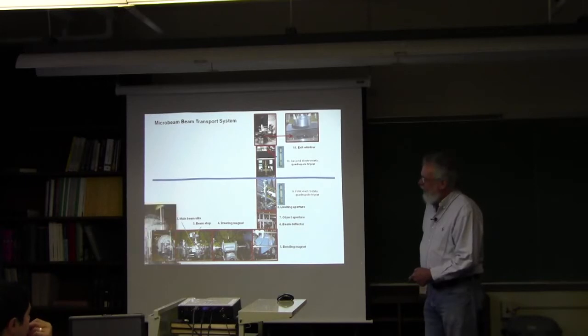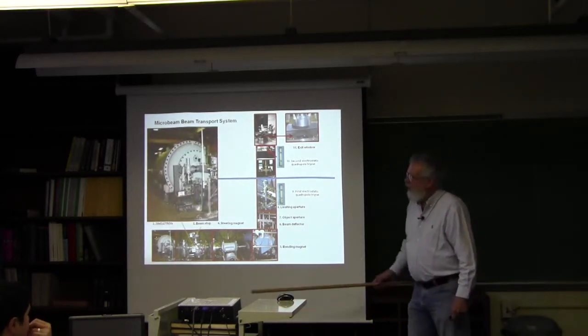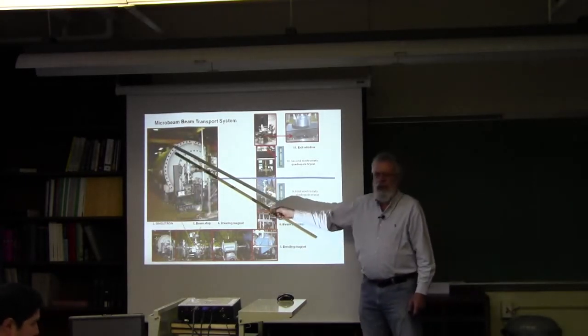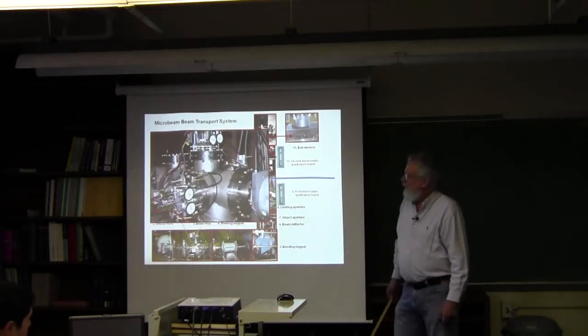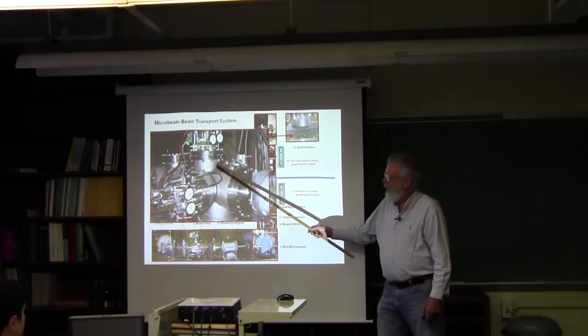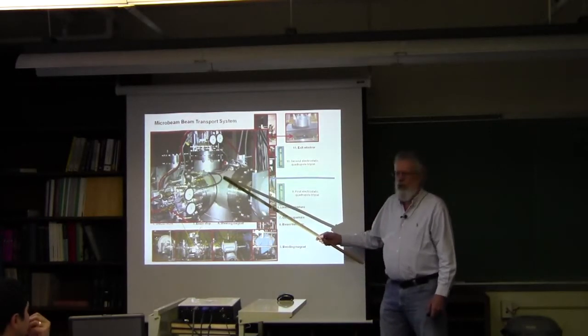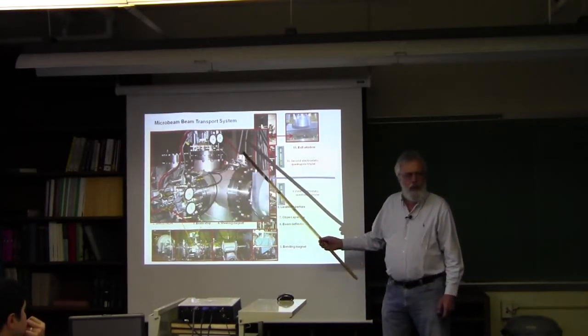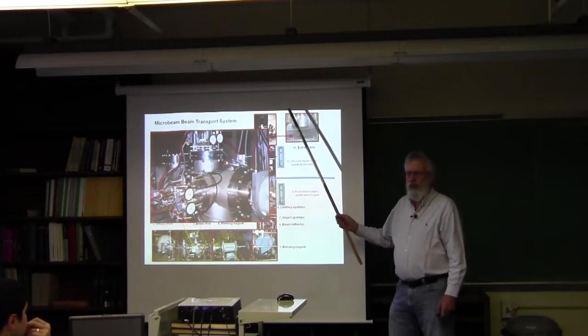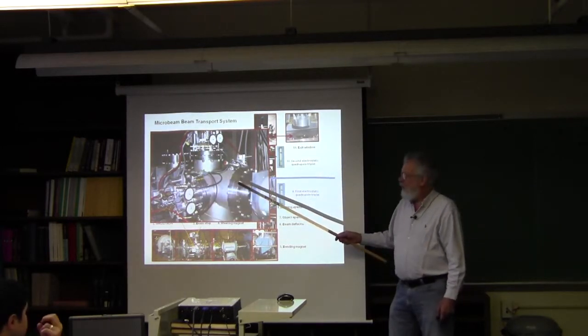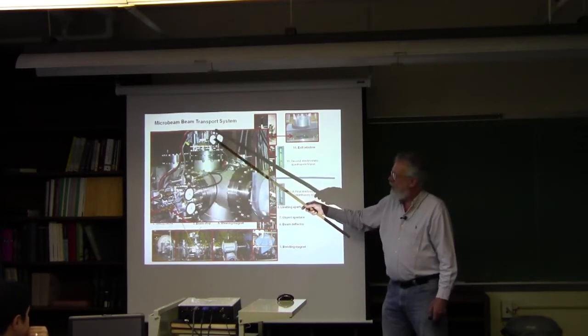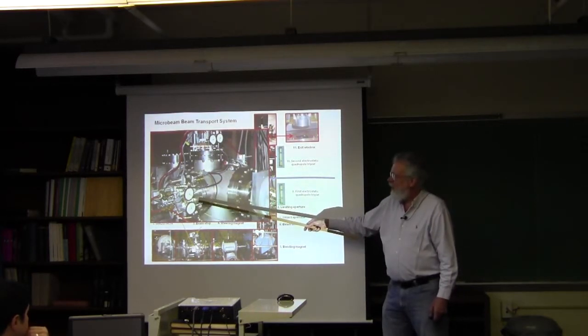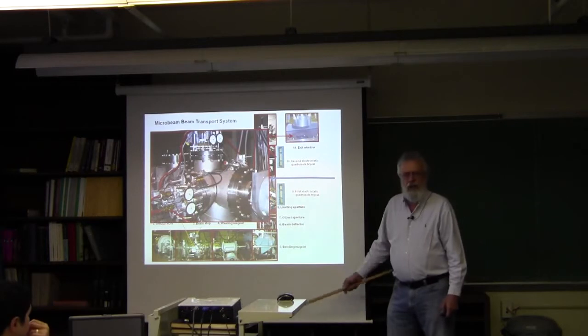There is the accelerator in its pressure tank and the beam comes out through this beam line. There is a box here which has a main beam stop to stop the beam when you don't want it to go upstairs. There are also four slits, top and bottom, top and side, which define the size of the beam at this location. These are remotely controllable from the accelerator control room.